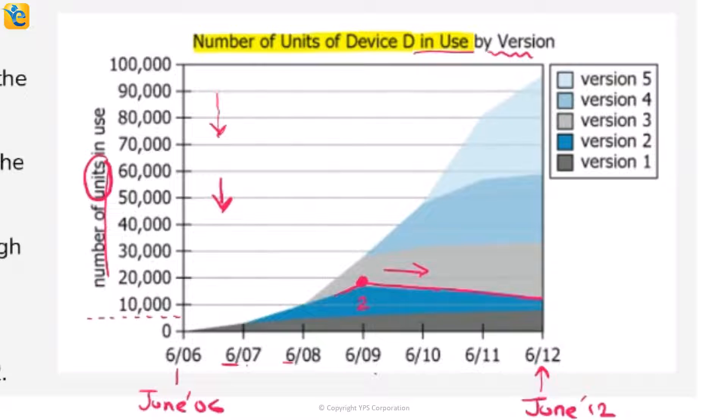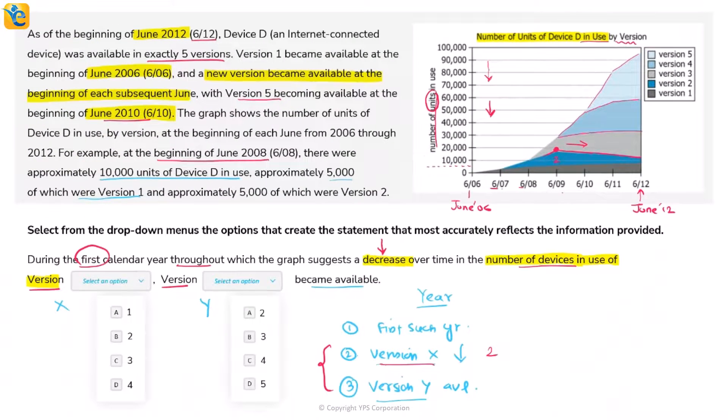Let me check the others. Version 3 is not decreasing, it's a slow increase. Version 4 is increasing upward, and Version 5 is also increasing. The only version showing a decrease is Version 2, so X is 2. That gives me the answer for the first blank already.